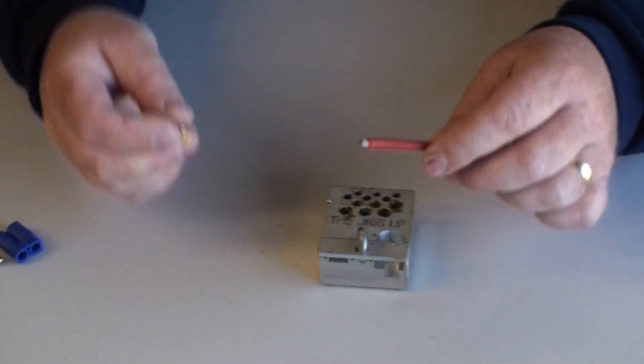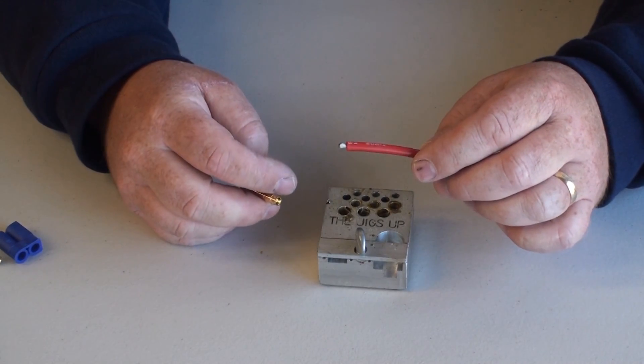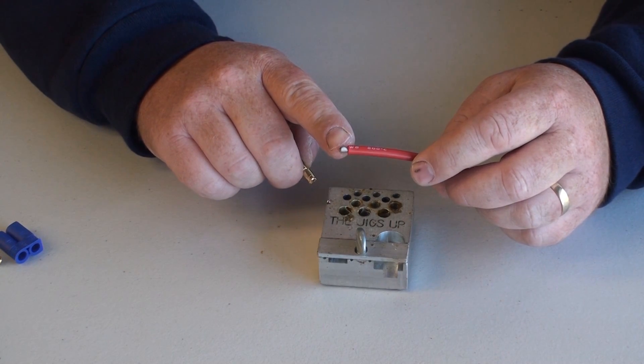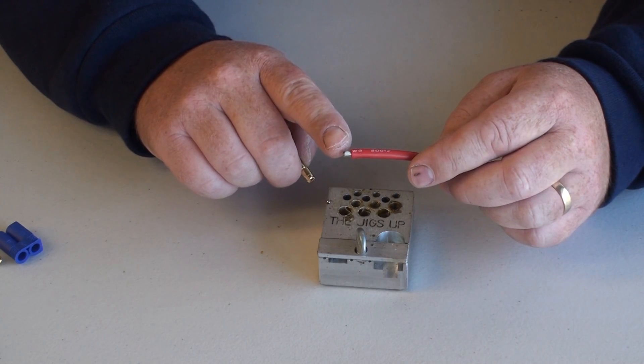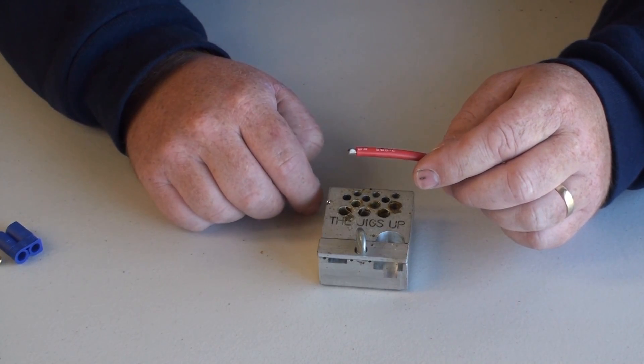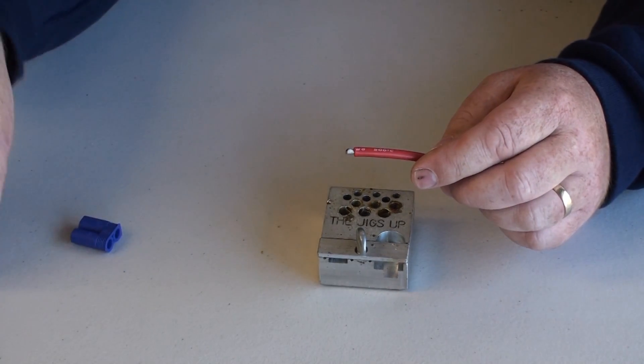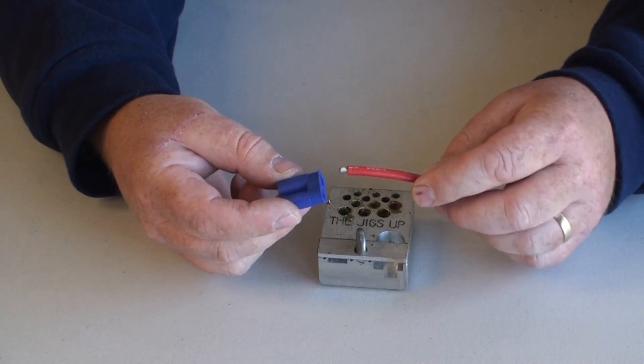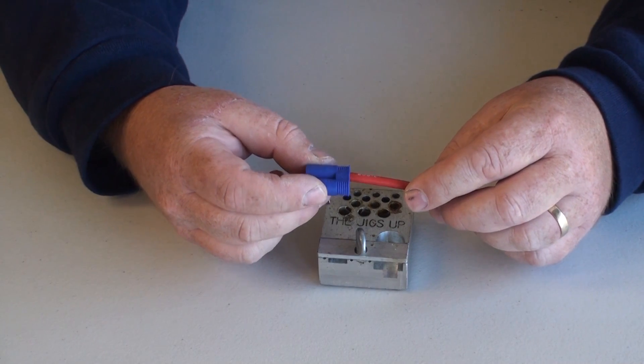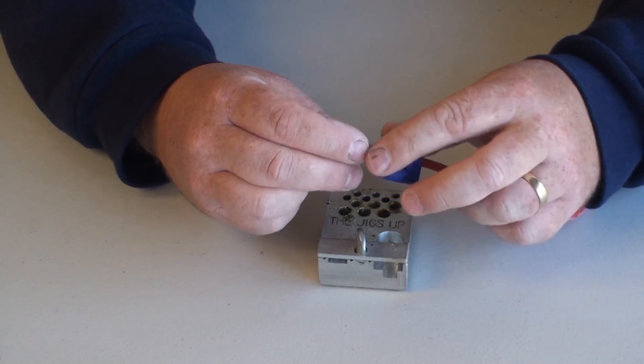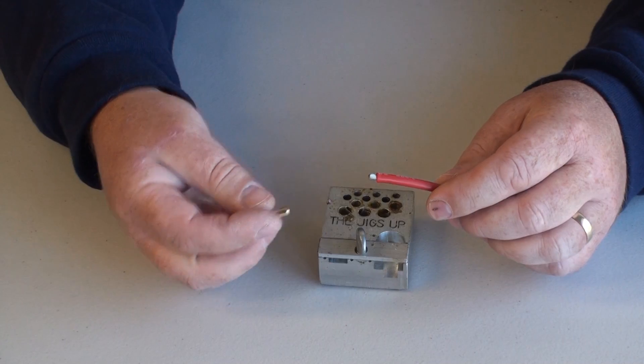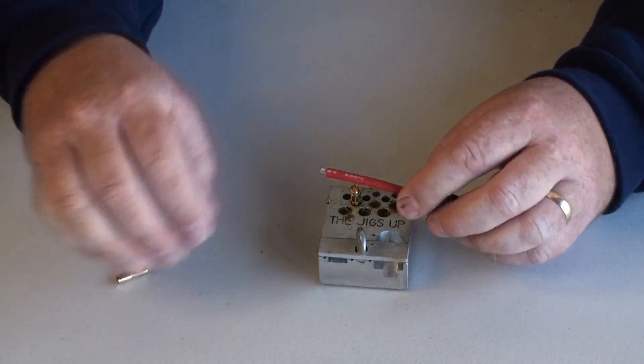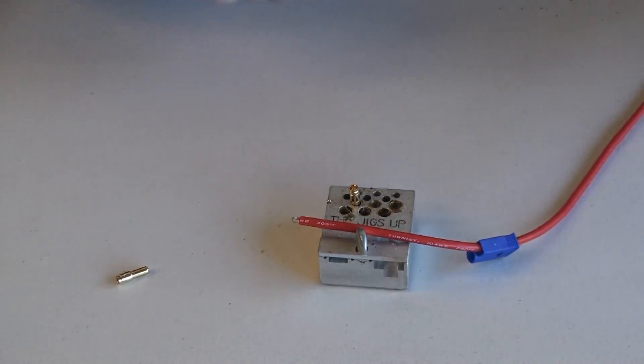So now I have the battery input lead on the ESC. I've trimmed approximately 5mm of insulation, exposing the wire. I have my male connectors. I'm going to pass the wire first through the plastic connector. And now I'm ready to tin both the wire and the inside of the brass terminal.